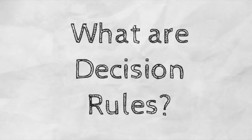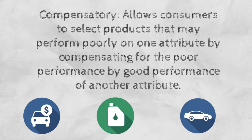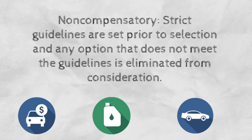There are two major types of rules that consumers use when selecting products: compensatory and non-compensatory. One example of a compensatory model is the attitude toward the object model, which gives a formula that allows for poor scores on one attribute to be compensated by good scores on another. Non-compensatory models can follow one of four rules. The conjunctive rule assumes that all features must meet or surpass a mental cutoff in order for a product to be selected. The disjunctive rule assumes that the consumer wants a product that excels at any of the features. The lexicographic rule assumes that the product thought to perform best on the most important attribute is selected. The EBA rule assumes that a minimum cutoff point is chosen and the consumer begins with the most important attribute.